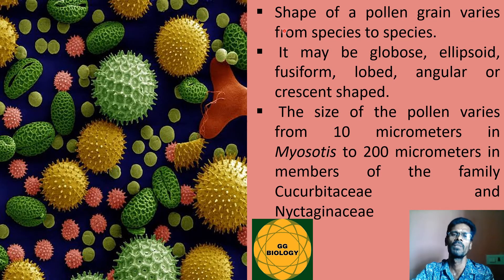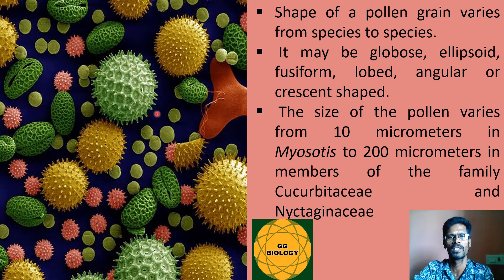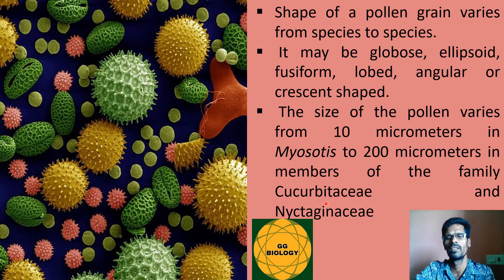Pollen grain shape varies from species to species. It may be globose, ellipsoid, fusiform (spindle-shaped), lobed, angular, or crescent in shape, as shown in the picture. The size of pollen grains also varies, ranging from 10 micrometers, as in the case of Myosotis, to nearly 200 micrometers in families such as Cucurbitaceae and Mirabilis.